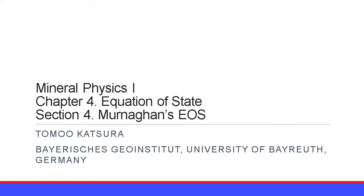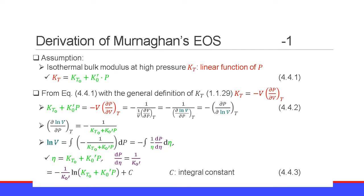Section 4 of Chapter 4, Equation of State, is about Murnaghan's Equation of State. The assumption used to derive Murnaghan's Equation of State is that the isothermal bulk modulus at high pressure, KT, is a linear function of pressure.